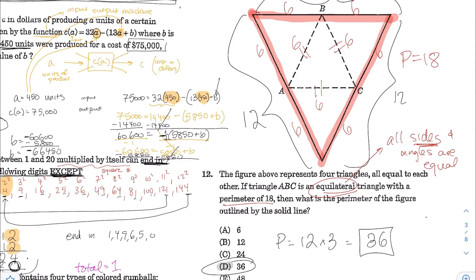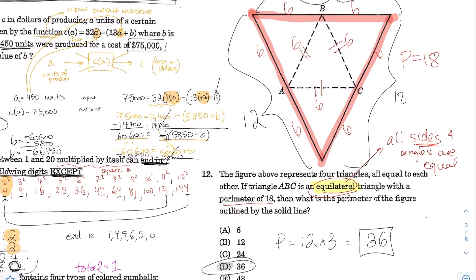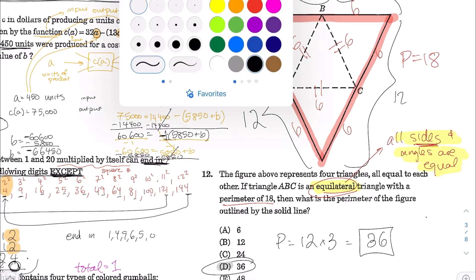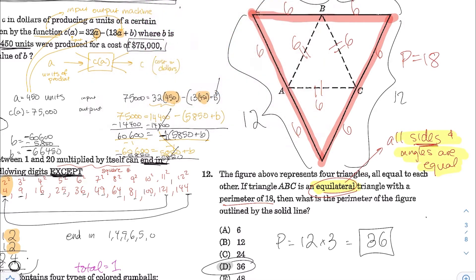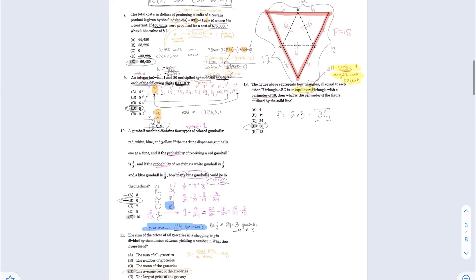The keyword was 'equilateral,' which means all sides are equal and all angles are equal. Here is the summary for this page — be wary of the typo for number 10, as there are two answers there.